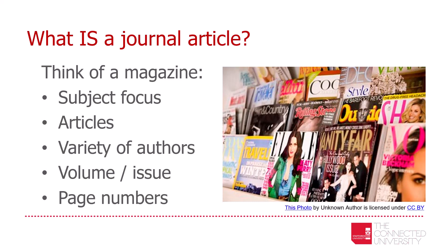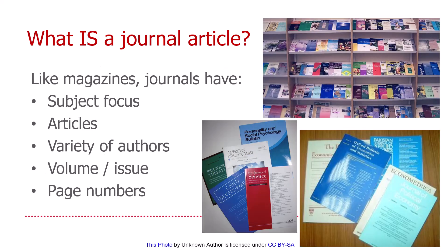If you're not sure what a journal article is, think about a magazine. A magazine generally has a subject focus which contains articles related to that subject, but within that there are a variety of different authors contributing. Each issue will have an issue number or name — it might be the September issue or the summer issue — and within each magazine there are page numbers to help you navigate through the articles via a contents page.